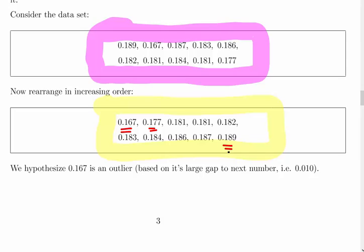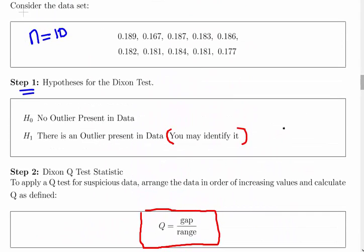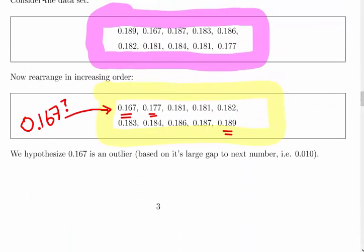We want to see if 0.167 is an outlier - the minimum value. How did I know it was the minimum? It has a difference here of 0.010 to the next value, whereas the gap at the maximum is 0.002, which is much less. We hypothesize that 0.167 is the outlier because of the large gap to the next number, which is 0.010.